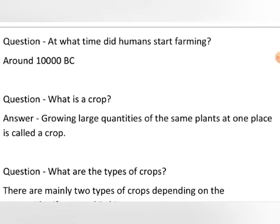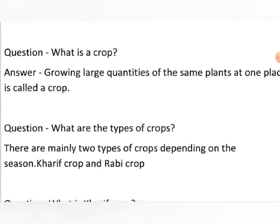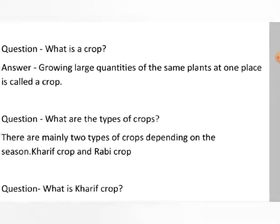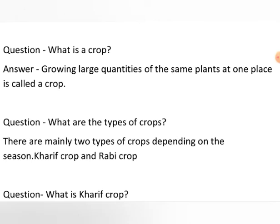Now let us begin with the topic of class 8th, first lesson of science subject: crop production and management. We start with the question: what is a crop? Growing large quantities of the same plants at one place is called a crop. Crop means when only one kind of plant is grown at a place in large amount.